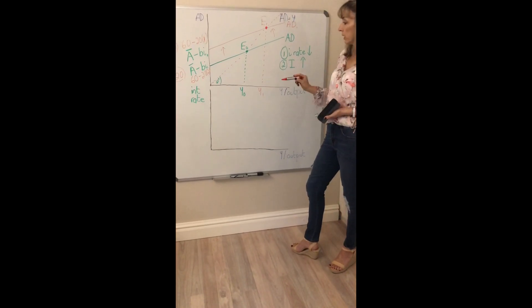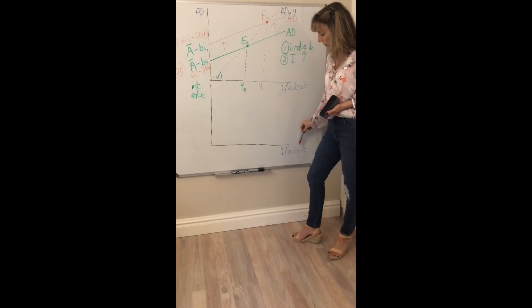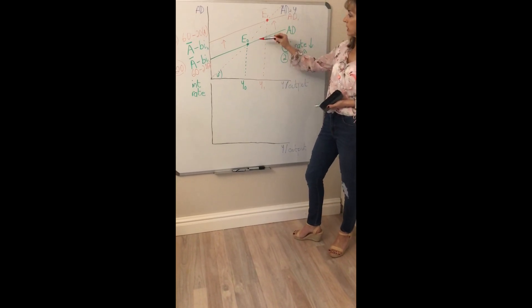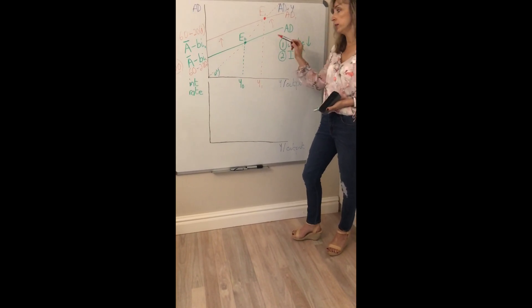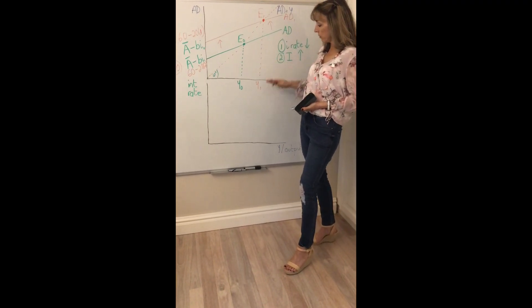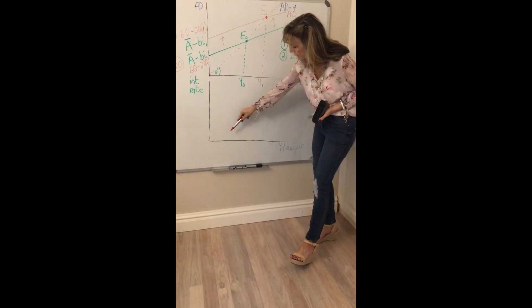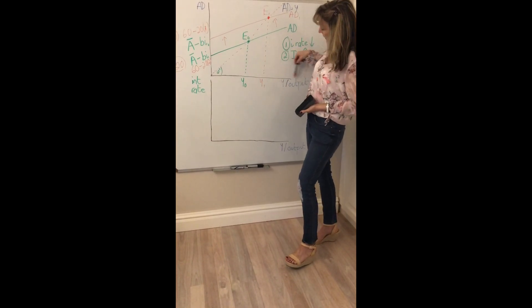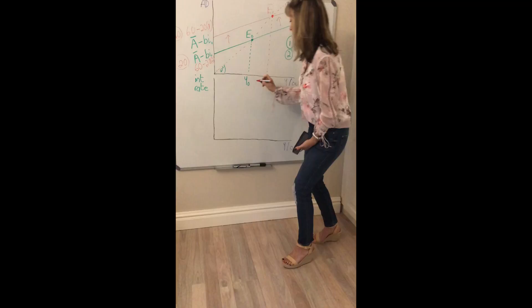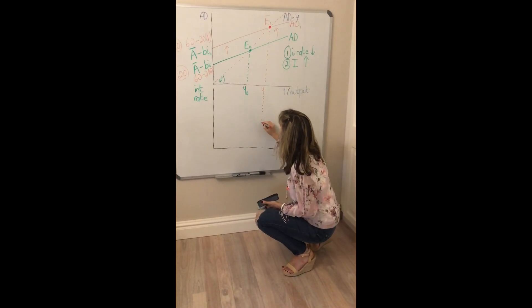But what we are really interested in is looking at the relationship between interest rate and income that's associated with these equilibria in the goods market. So we can trace down from this diagram. We can trace down to a new set of axes because we've got the same thing on the horizontal axis.